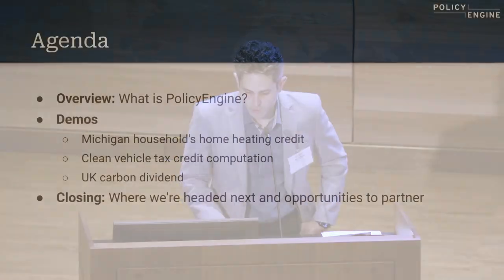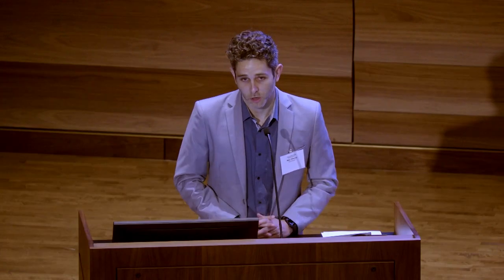I'll start by just describing what Policy Engine is, and then move on to two or three demos depending on timing. In particular, I'm going to start here in the US, where there are a number of policies — LIHEAP, you may have heard of this. Michigan has a version of that policy, which is a low income home energy assistance program done through the tax code. I'll show the impacts of that policy on an individual, then potentially talk about the clean vehicle tax credit, and also a carbon dividend in the UK — a policy our model is capable of forecasting. Finally, I'll talk about where we're headed next and opportunities to partner, especially given the open nature of this event.